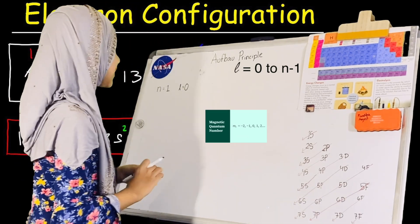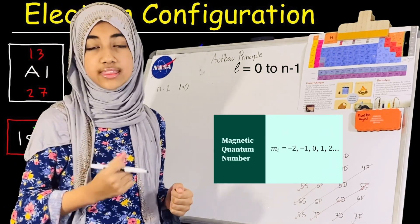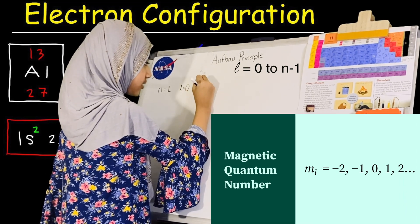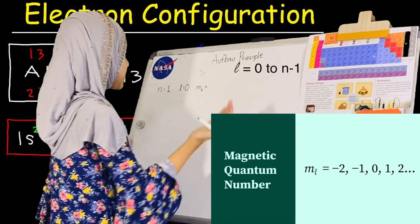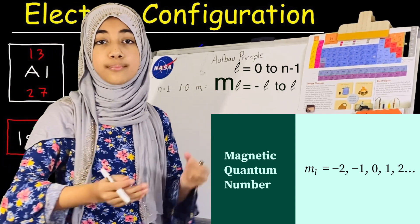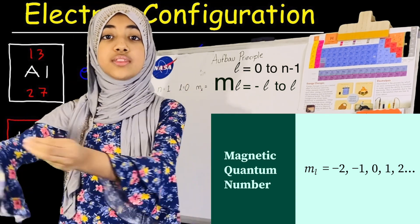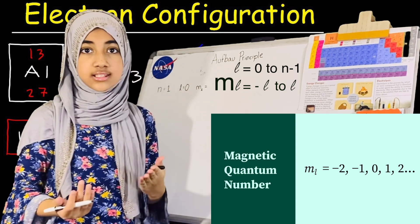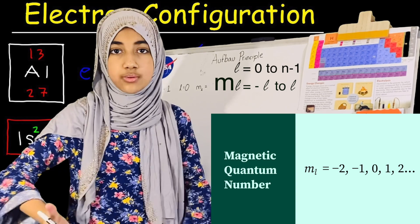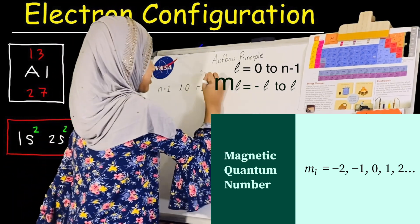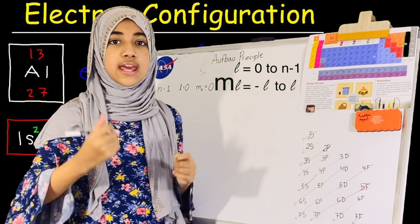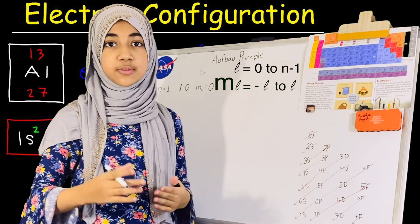Our third quantum number is the magnetic quantum number. We represent it as m subscript l, or ml. The value of ml can be all the numbers from negative l to positive l. In this case our l is 0, and there's no such thing as negative 0, so our ml is just 0.